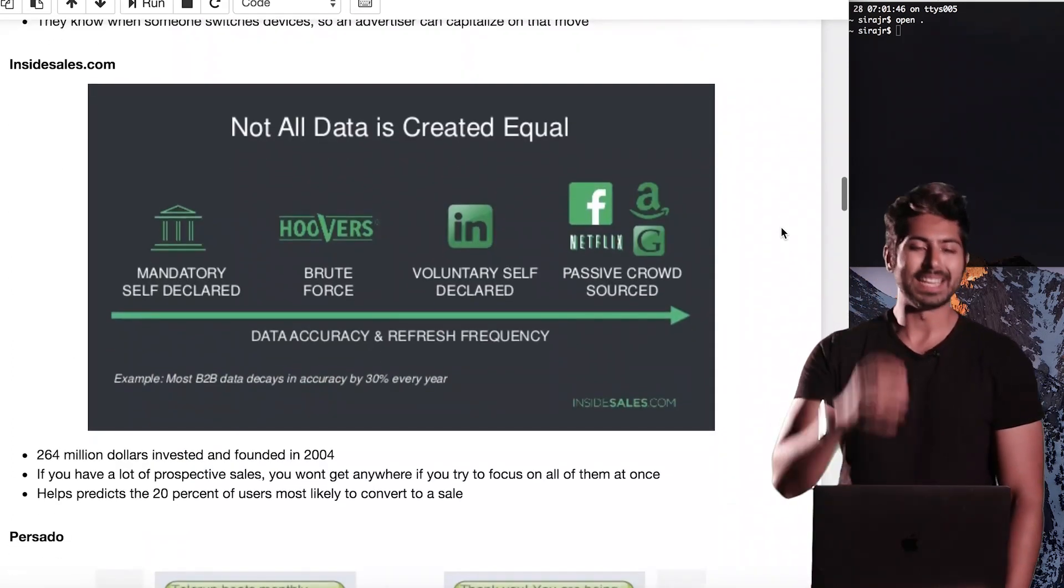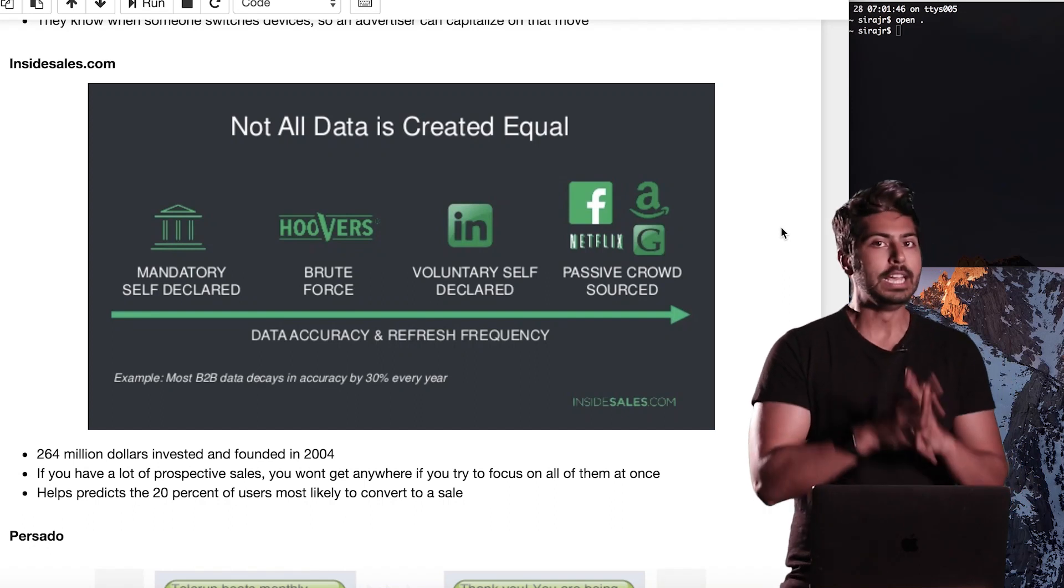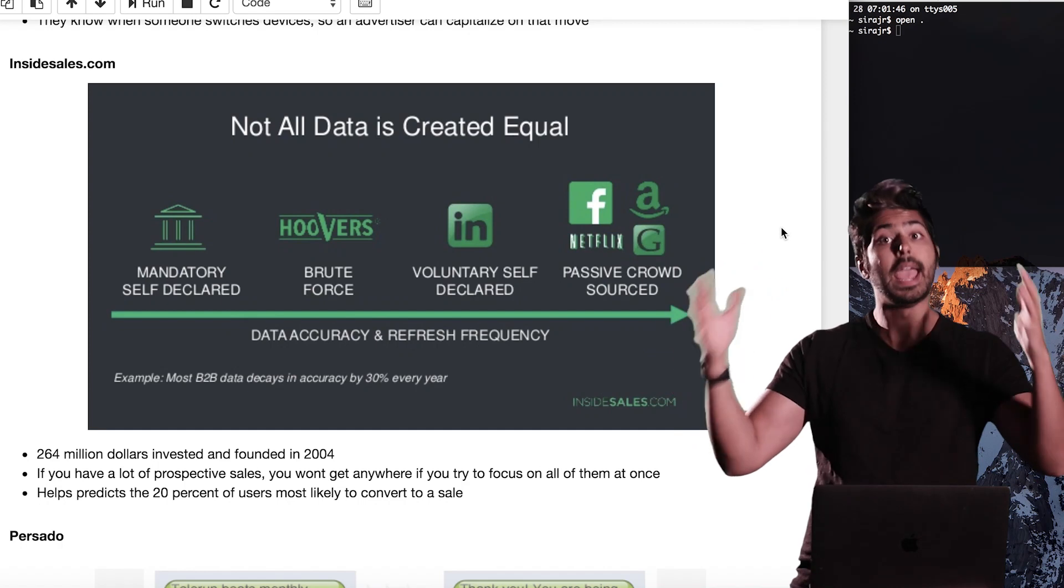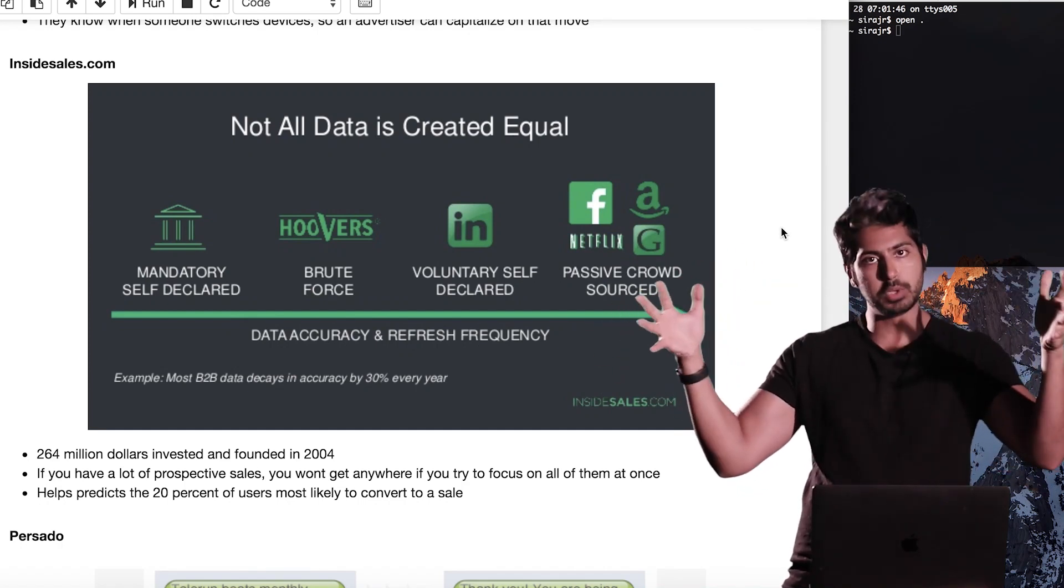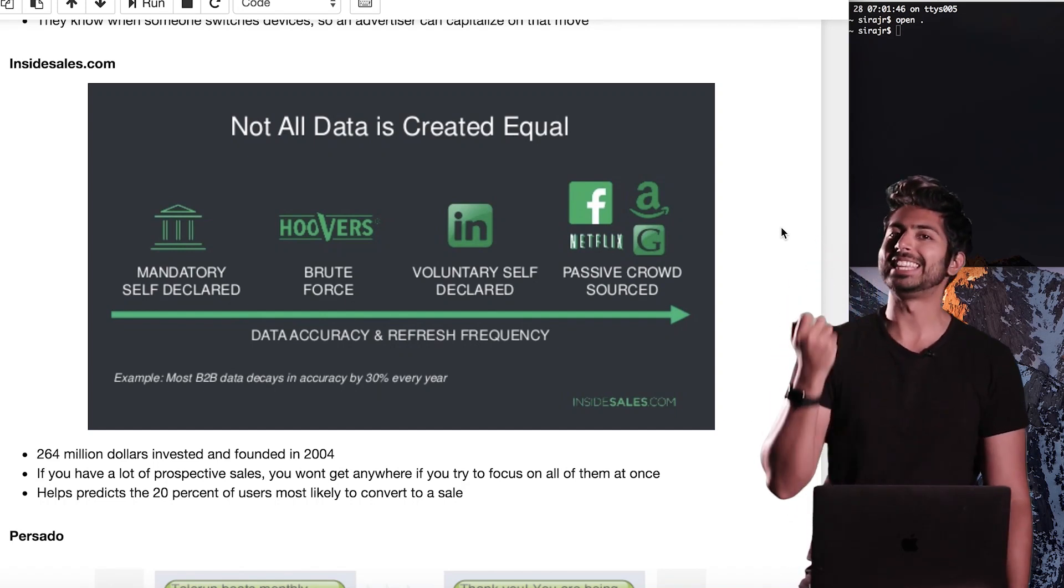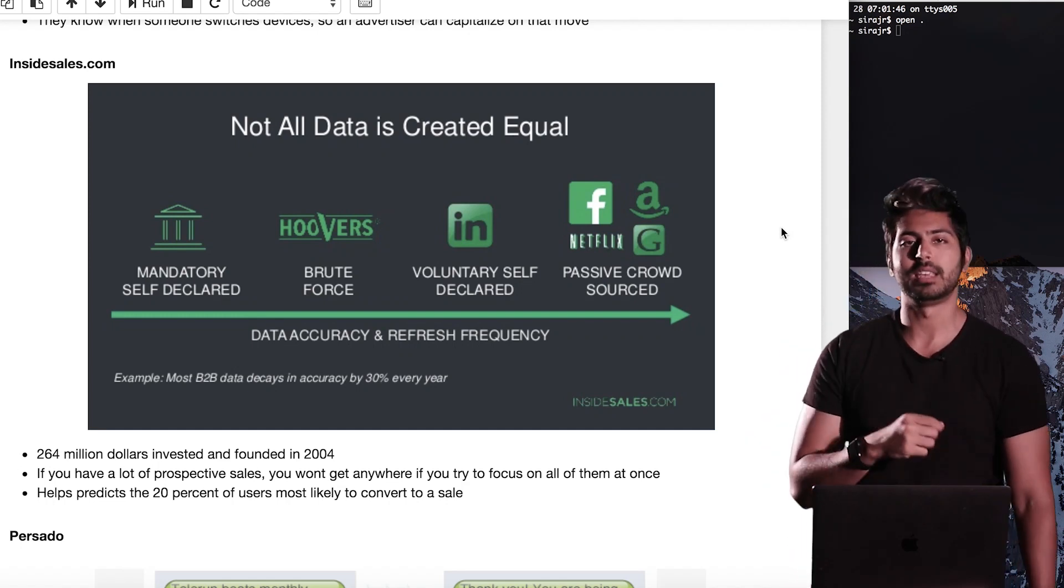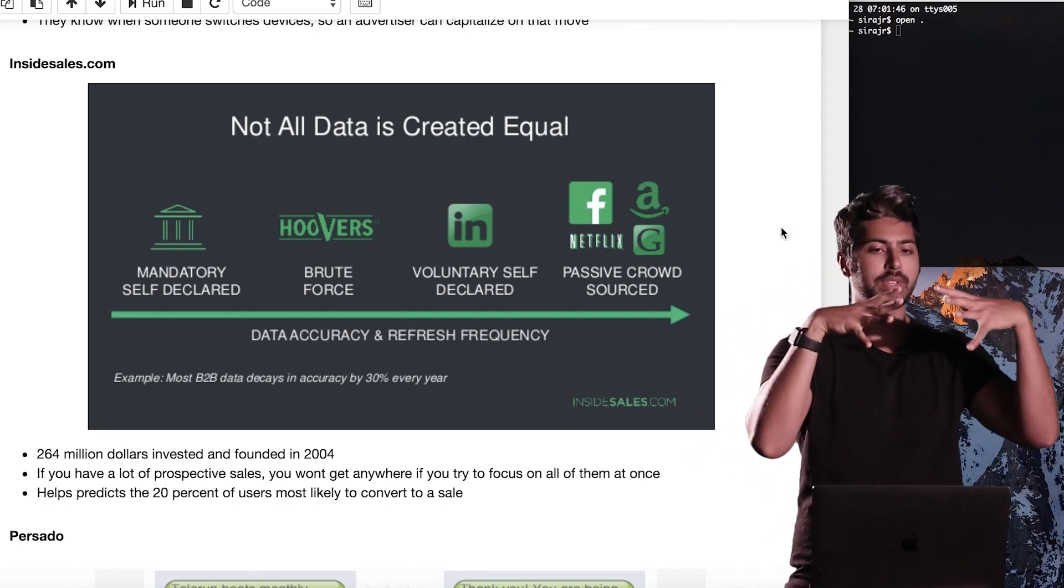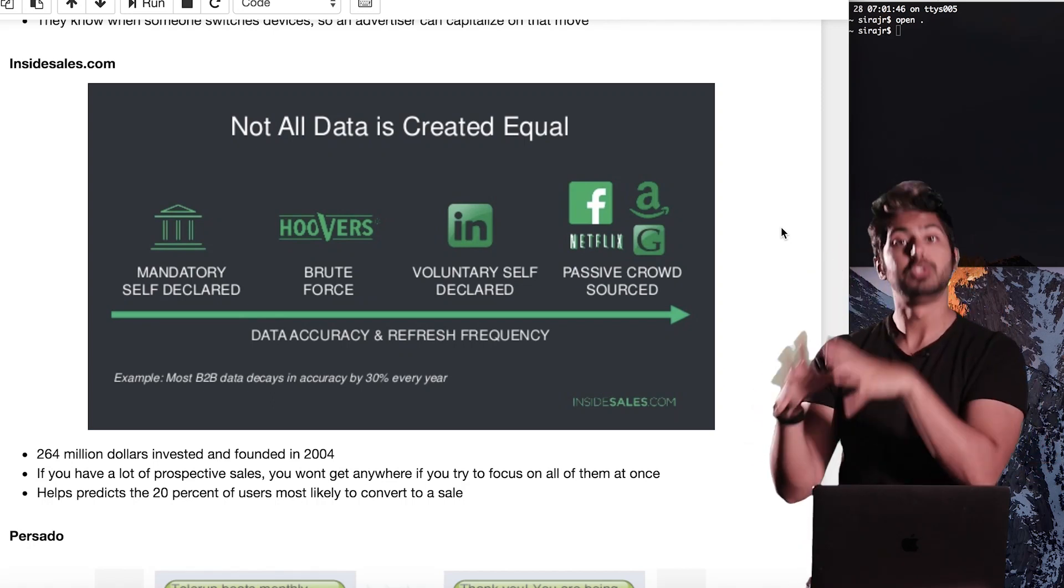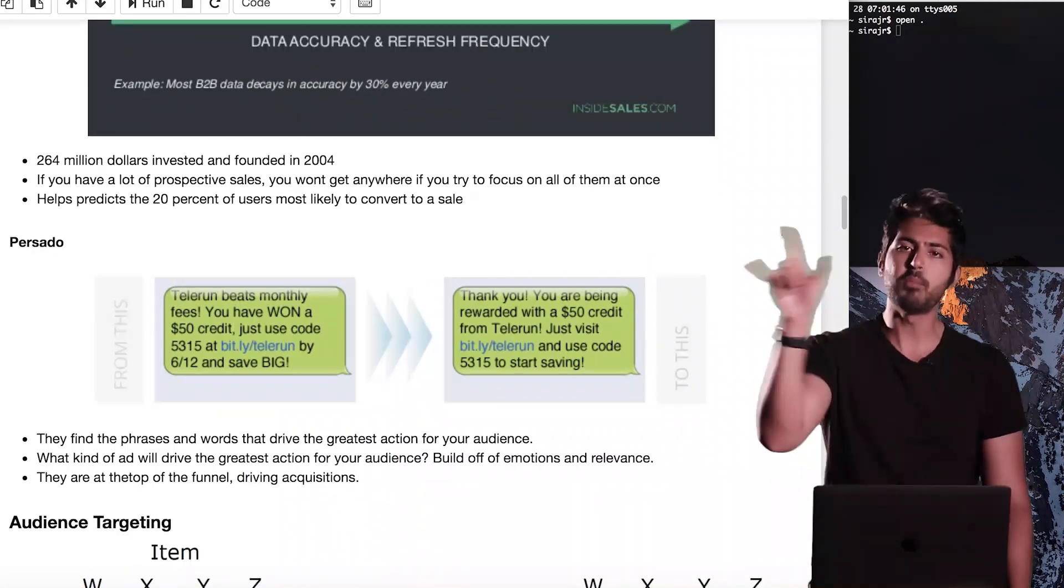Another example is InsideSales.com. So if you have a lot of prospective sales, you can't just target all of them because you're going to be wasting time and energy and money on targeting this giant segment of users, when it turns out that the customers that are most likely to convert are probably only 20%. And that's what InsideSales does - it helps you find that 20% of your customer base that are going to be the most likely to convert to sales for your product.